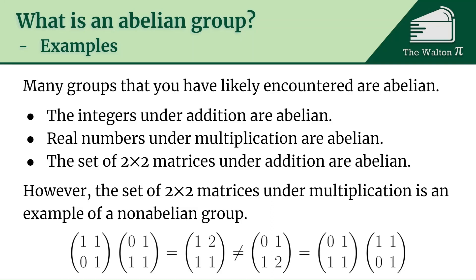We can see that by looking at the matrices [1 1 / 0 1] and [0 1 / 1 1]. If we multiply them in one order we get the matrix [1 2 / 1 1], and if we multiply them in the other order we get [0 1 / 1 2], which are different matrices. So while this set is a group — and that takes a little work to show — this is a quick example to show it is not an Abelian group because multiplication does not commute.